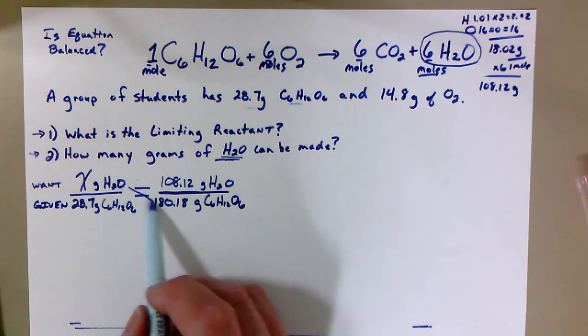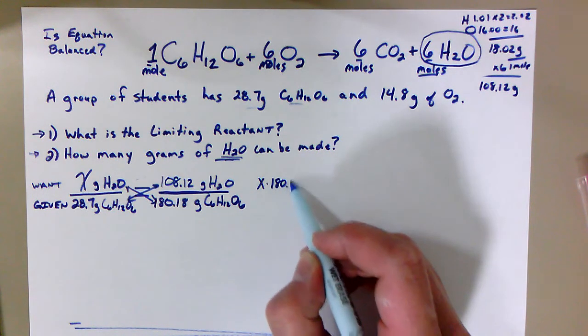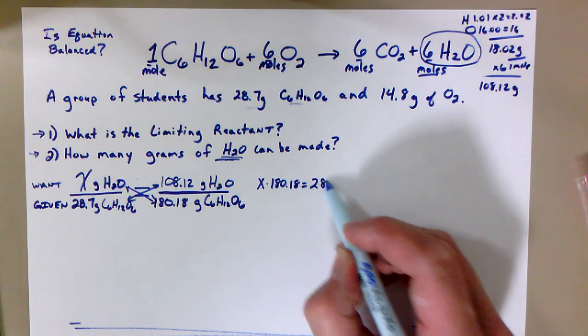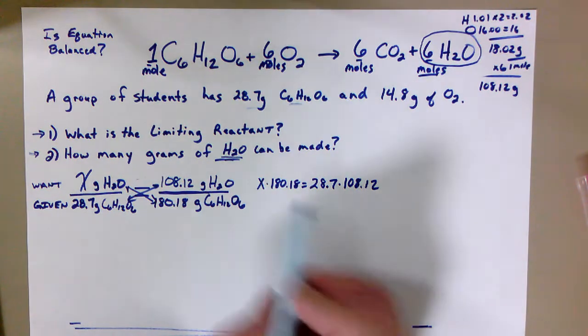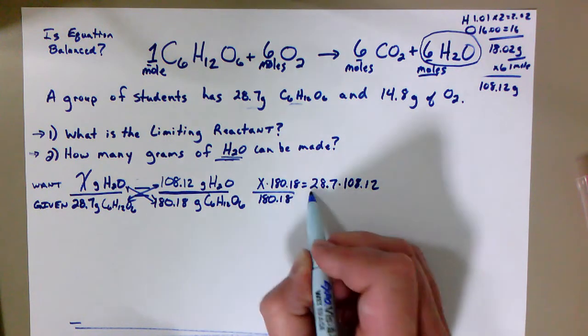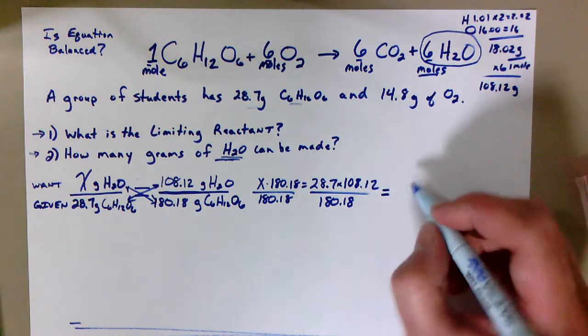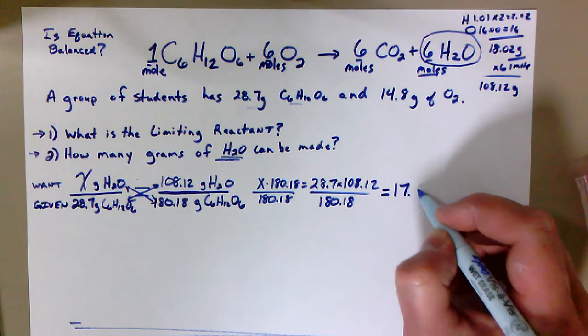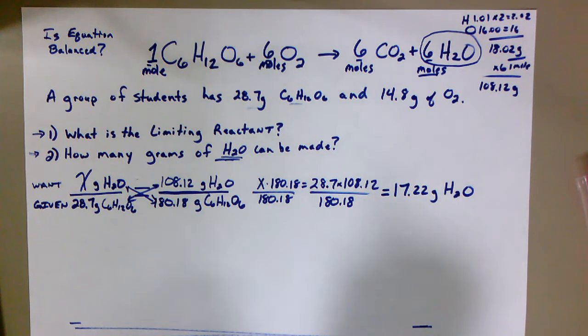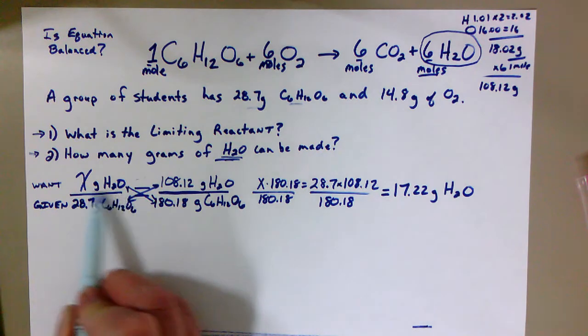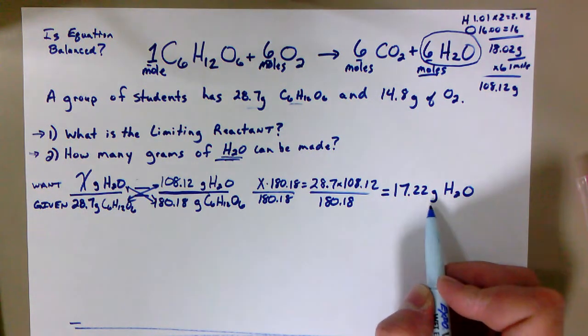Now this is just a simple cross multiply question. I multiply across on both sides of the equal sign, so I'd have x times 180.18 equals 28.7 times 108.12. To get x by itself I would have to divide both sides by 180.18. And when you solve that, you're going to get 17.22 grams of water, H2O. But I'm not done. What I've done here is I have figured out if, that's the key word there, if we react all 28.7 grams of the C6H12O6, it is enough to make 17.22 grams of H2O.